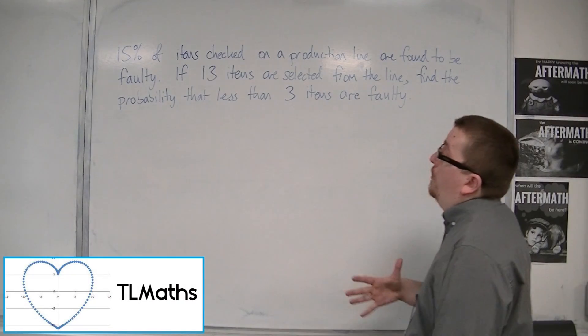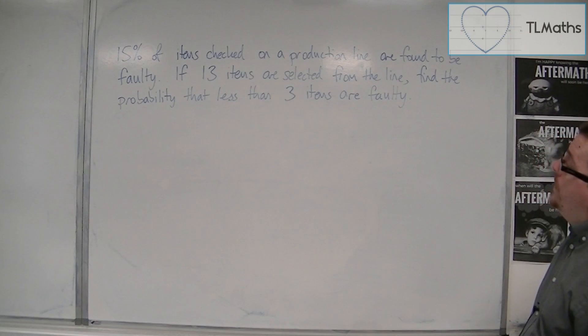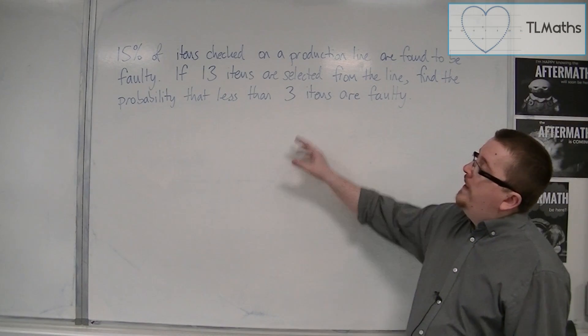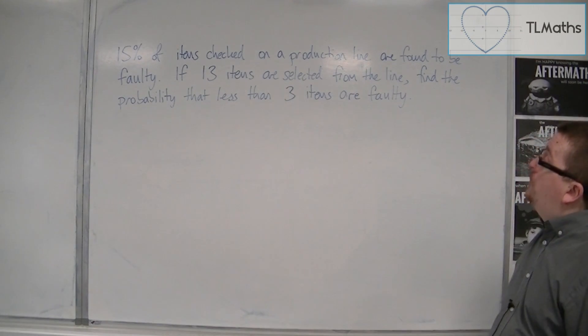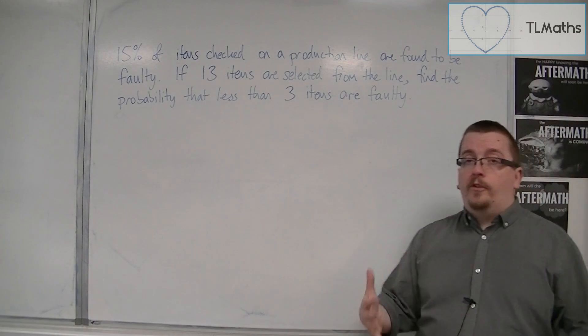In this problem, we have 15% of items checked on a production line are found to be faulty. If 13 items are selected from the line, find the probability that less than 3 items are faulty.